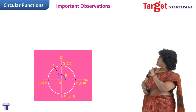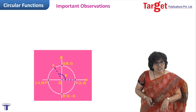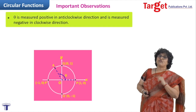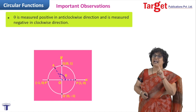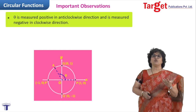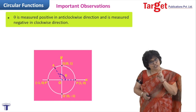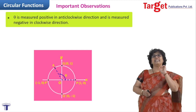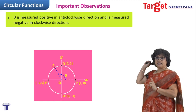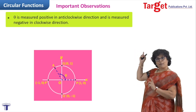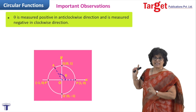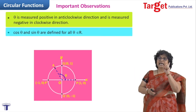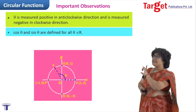Now I make certain observations from this unit circle. My first observation is that theta is measured positive if point A is moving in the anti-clockwise direction. So obviously you will ask — can theta be negative also? Yes, we do have negative theta, and that negative angle is measured in the clockwise direction. So point A can move in anti-clockwise direction or in clockwise direction.